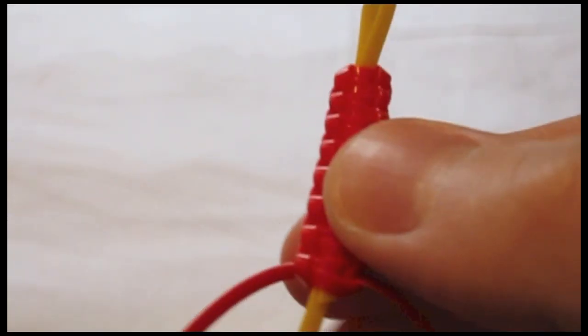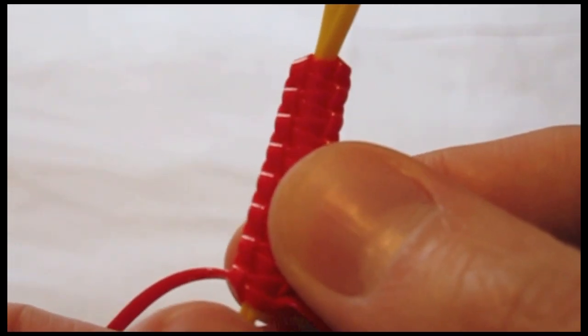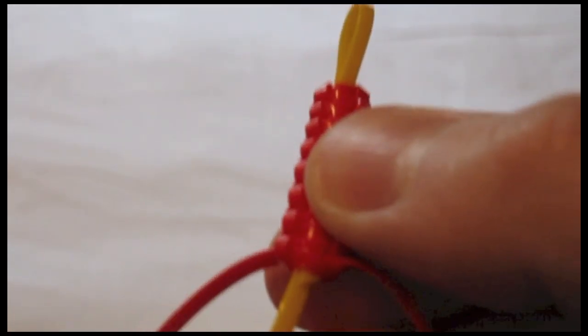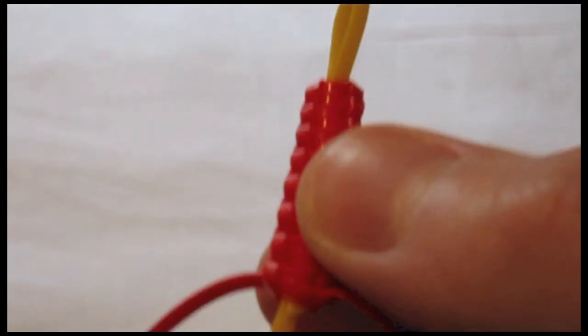In one more stitch, I will have completely covered up the shorter strand from the short piece of gimp. You can see that small yellow amount sticking out at the bottom.